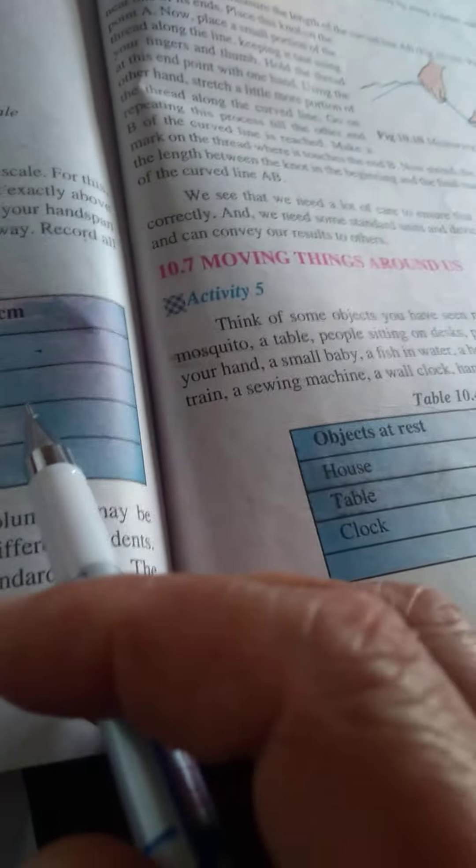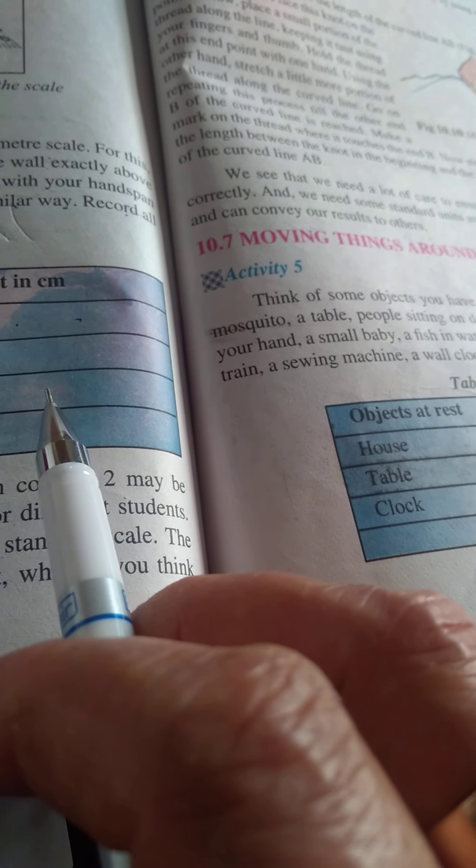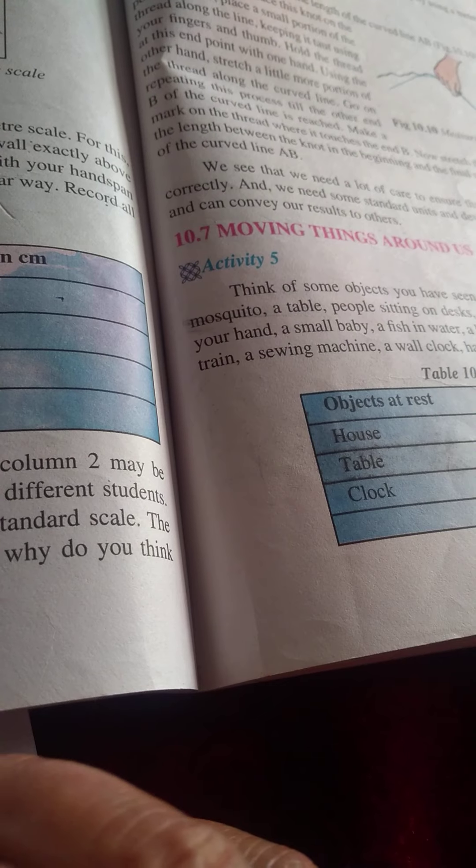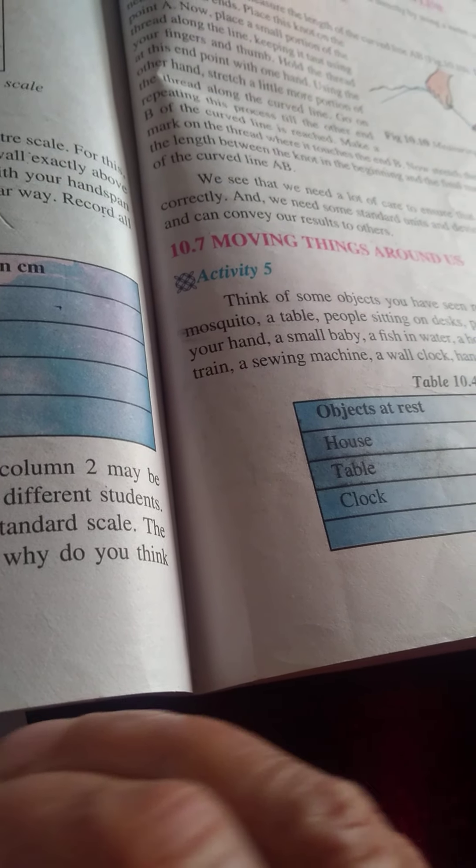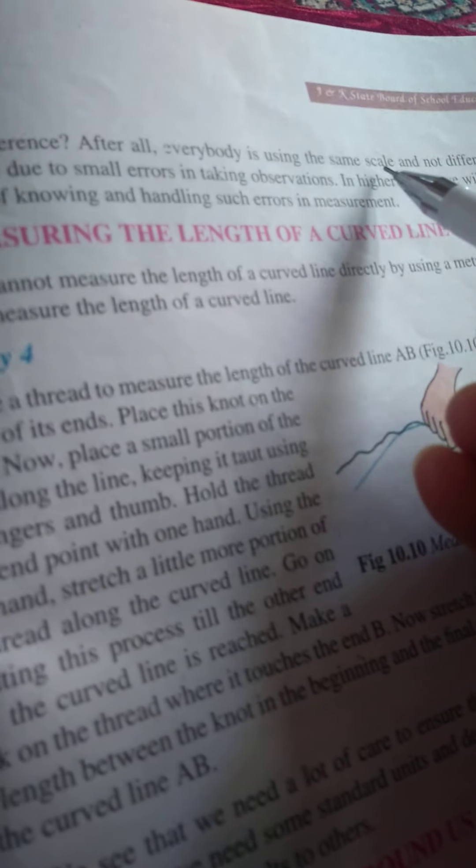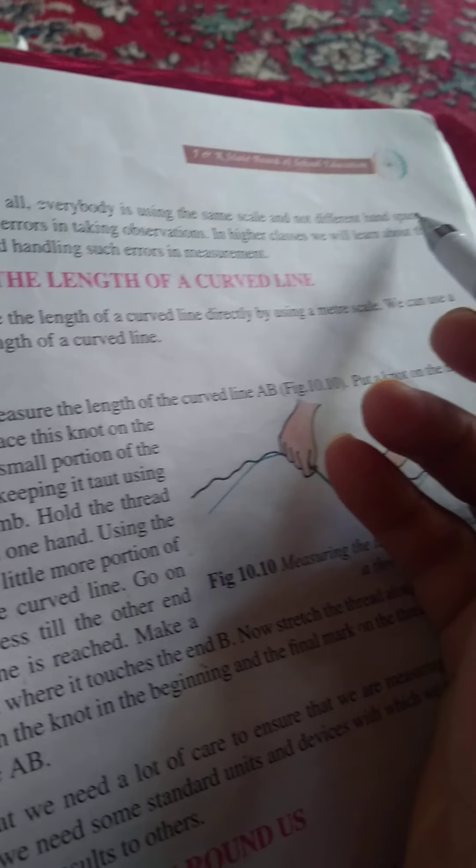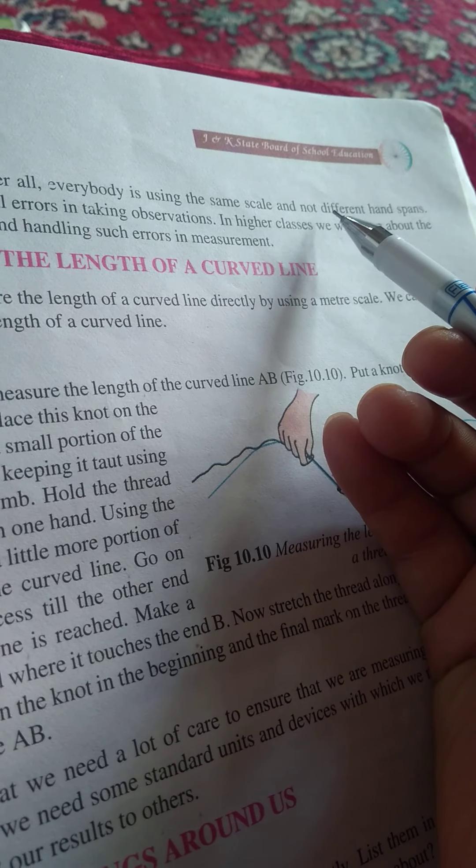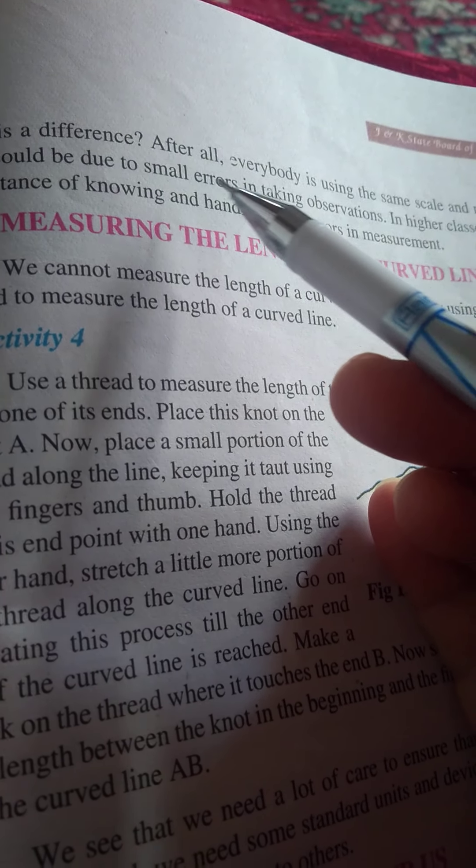Are they exactly equal? Why is there difference? After all, everybody is using the same scale and not different hand span. This could be due to small errors in taking observations.